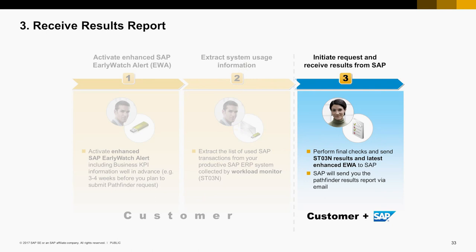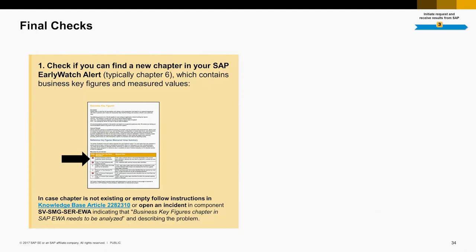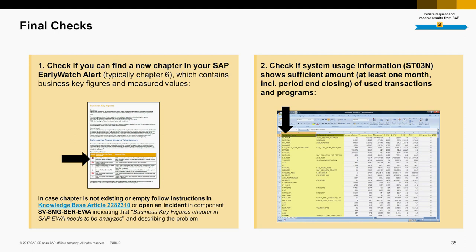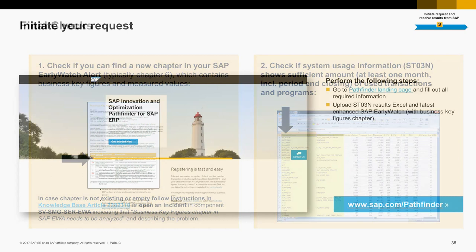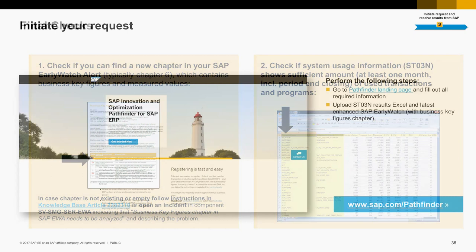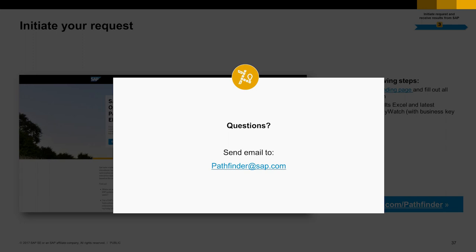At last, you perform the final checks and initiate the request. Before submitting, please do the following final checks. Firstly, check if you can find a new chapter in your SAP EarlyWatch Alert — typically it's Chapter 6. This chapter contains the business key figures and the measured values. Secondly, check if system usage information shows a sufficient amount of used transactions and programs. Now go to the Pathfinder landing page at sap.com/pathfinder, fill out all required information, and upload the two files. SAP will send you the Pathfinder results report within five working days via email. If you have problems or questions, please send an email to pathfinder@sap.com.